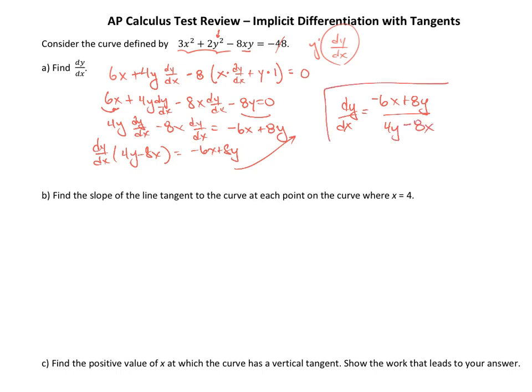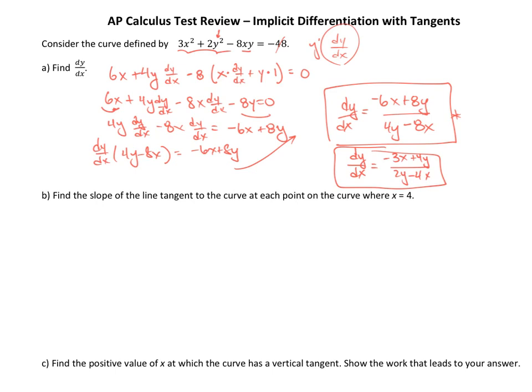Leave it like this on the AP test — don't try to simplify it. I'm going to simplify this just to make it a little bit easier when we do some calculations later. I know that I told you don't simplify, but the numbers will get a little nasty later, so I'm going to just divide everything by 2. So, this becomes negative 3x plus 4y over 2y minus 4x. Again, you don't need to — I would leave it like this.